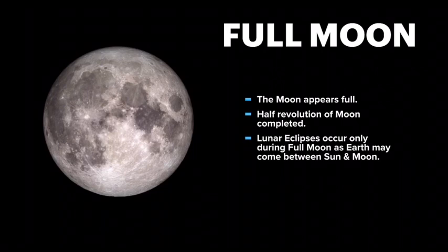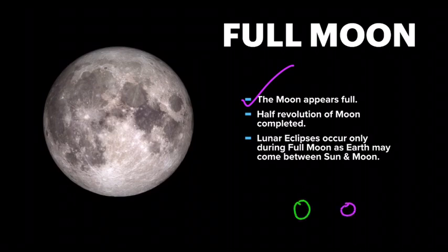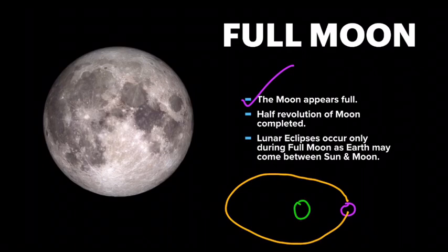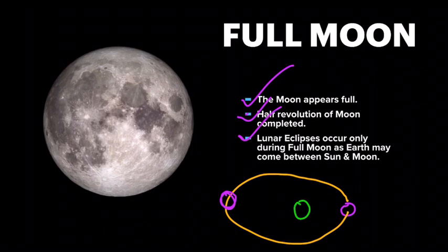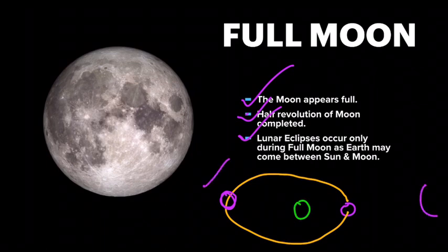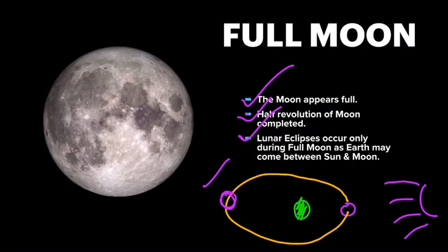The waxing gibbous turns into a full moon. A full moon means the moon appears fully round and complete from earth. At this point the moon has completed half of its revolution around the earth. An important point: lunar eclipses occur only during a full moon, because this is the only time the earth may come between the sun and the moon. On the diagram, the moon is on the opposite side of the earth from the sun, so the earth's shadow can fall on the moon — that's when we see a lunar eclipse.